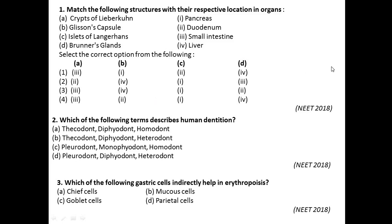Question number one: Match the following structures with their respective locations in organs — crypts of Lieberkühn, Glisson's capsule, islets of Langerhans, Brunner's glands. Crypts of Lieberkühn are present in the small intestine, islets of Langerhans belong to the pancreas, and Brunner's glands are present in the duodenum. So according to this matching, option three is correct for question one.